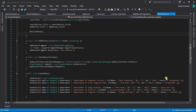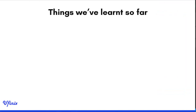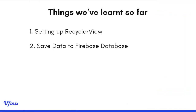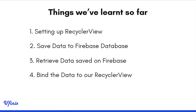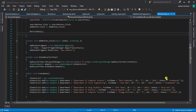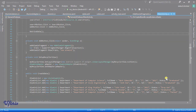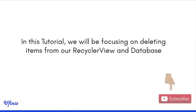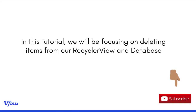Welcome back to this series. In the previous videos we've been able to set up our RecyclerView, save data to Firebase, retrieve our data from Firebase, and bind that data to our RecyclerView. In this particular class we'll be focusing on deleting items from the RecyclerView. This is a process you don't want to skip because sometimes you might want to add sub-views to your RecyclerView and you need a way to attach click event handlers to those sub-views.